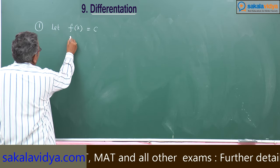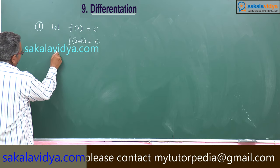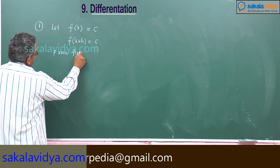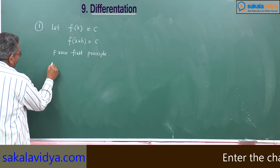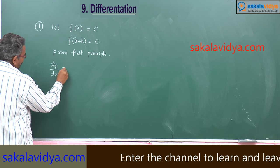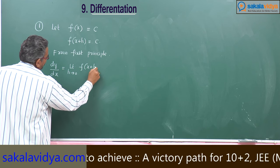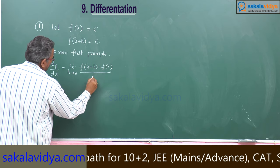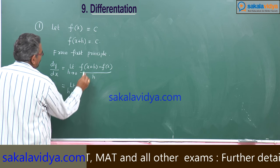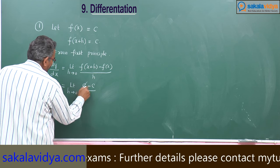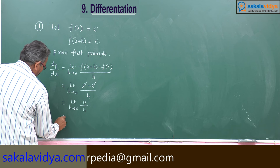From first principles, dy by dx is equal to limit h tends to 0, f of x plus h minus f of x by h. Now f of x plus h is also c, so this becomes limit h tends to 0, c minus c by h. The c's get cancelled, giving limit h tends to 0 of 0 by h, and 0 divided by something is 0.